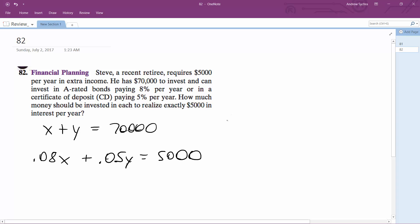You just substitute. So 0.08, we'll substitute in 70,000 minus X for Y. So 0.08 times (70,000 minus X) plus 0.05Y equals $5,000.